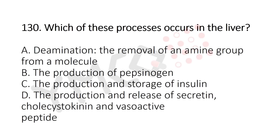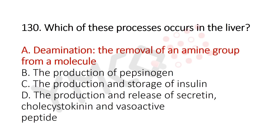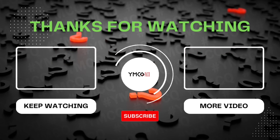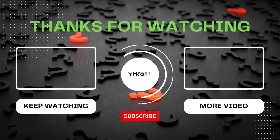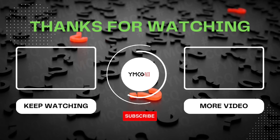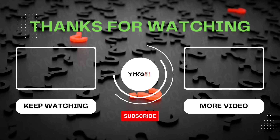Now Question 130: Which of the following processes occurs in the liver? Option A: deamination — the removal of an amine group from a molecule, Option B: the production of pepsinogen, Option C: the production and storage of insulin, Option D: the production and release of secretin, cholecystokinin, and vasoactive intestinal peptide. The answer is Option A: deamination — the removal of an amine group from a molecule. That's all for today. If you have any doubts, please mention them in the comment box. I'll be back with endocrine system MCQs next week — bye bye, thank you!